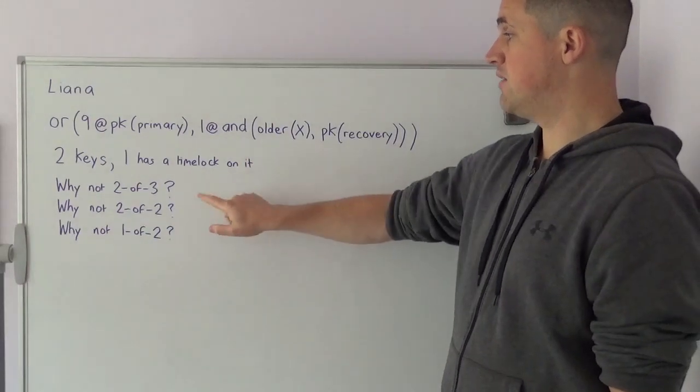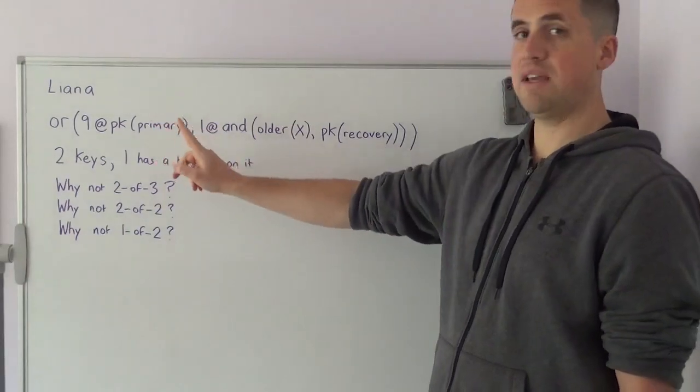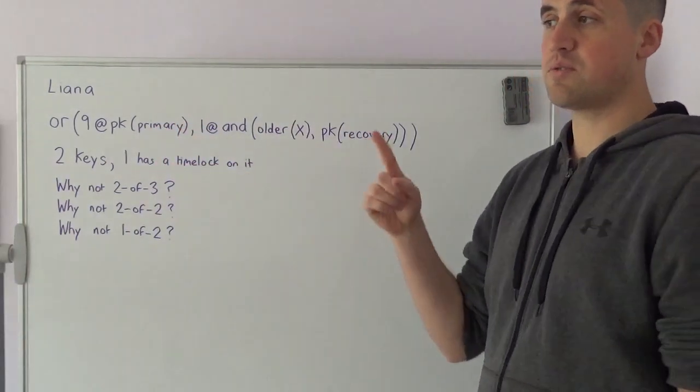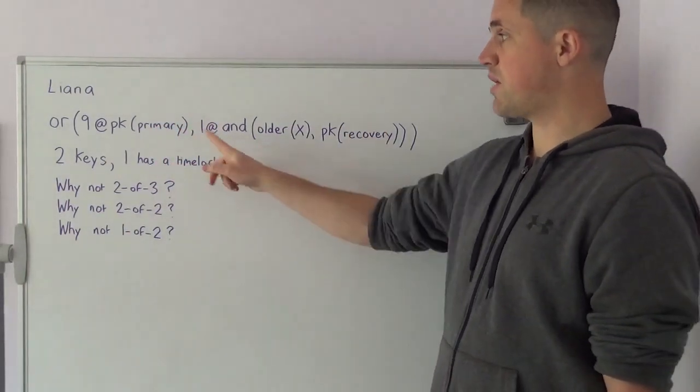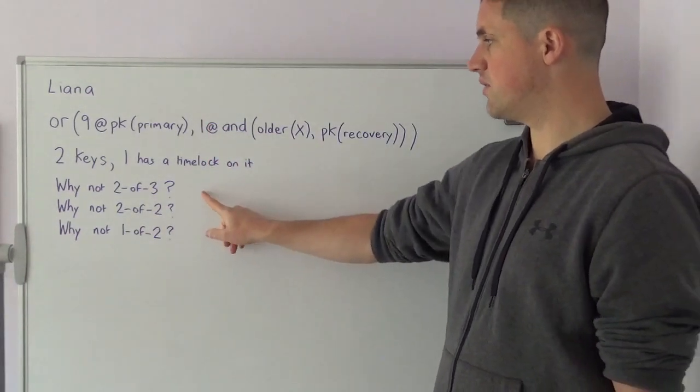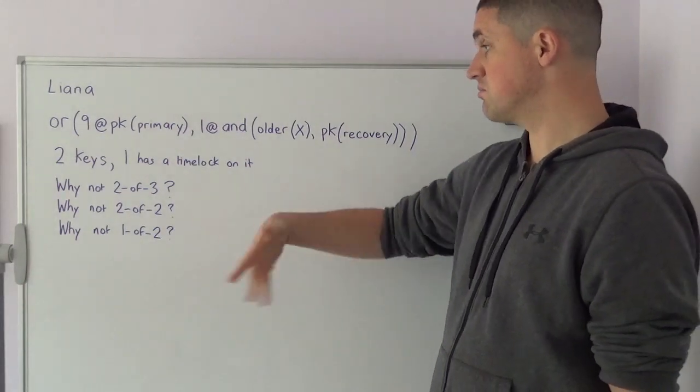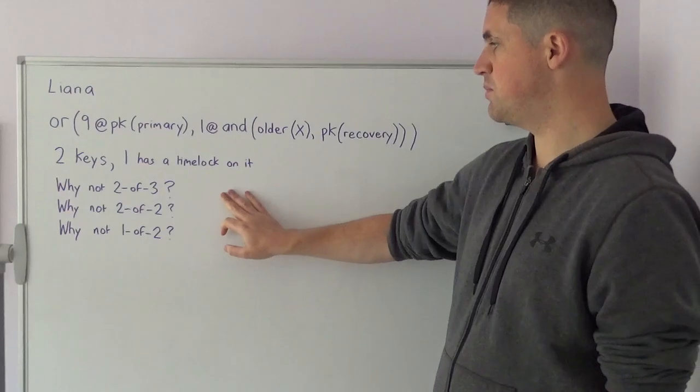In comparison to the Liana policy, you only need the primary key. You only need to produce one signature associated with the primary key every time you move the funds. It's a lot more cumbersome to move your funds with a 2 of 3, because you need to produce two signatures from two signing devices every time you move the funds.